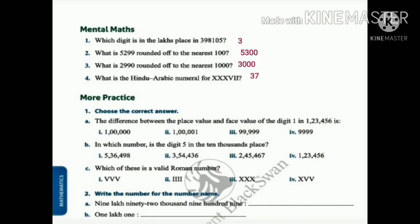Now let us do some more practice. Choose the correct answer. The difference between the place value and face value of the digit 1 in 1,23,456 is dash. So we have to choose the correct answer. We know that the place value of 1 is 1,00,000 and the face value of 1 is 1, so when you subtract the numbers you get the answer as 99,999. So option 3 is the correct answer. Now in which number is the digit 5 in the 10,000 place? We can easily see that the second option is the correct one.